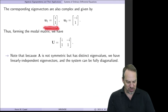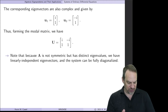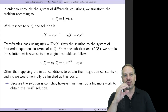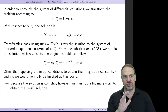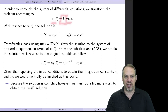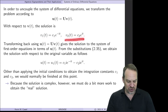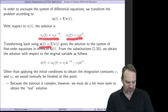We get the eigenvectors using the usual process. They are i1 and minus i1 — complex but regular eigenvectors. We form our modal matrix U in the usual way. Since our derivations did not restrict to real eigenvalues and eigenvectors, the diagonalization still works. Converting from U to V using the modal matrix, the uncoupled solutions are: V1 equals C1 e to the minus iT and V2 equals C2 e to the iT. Then we convert back to the original variables by multiplying by U.